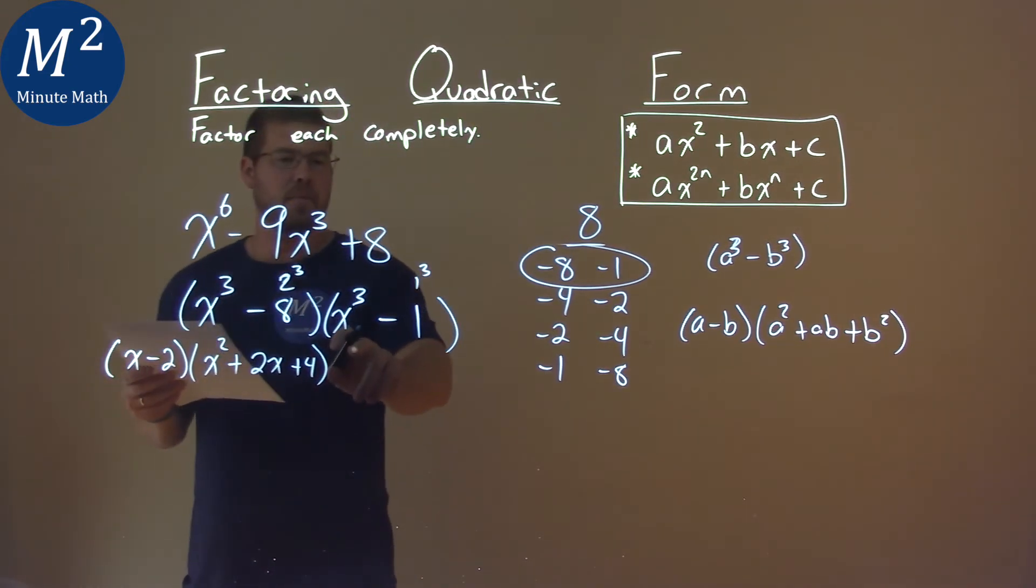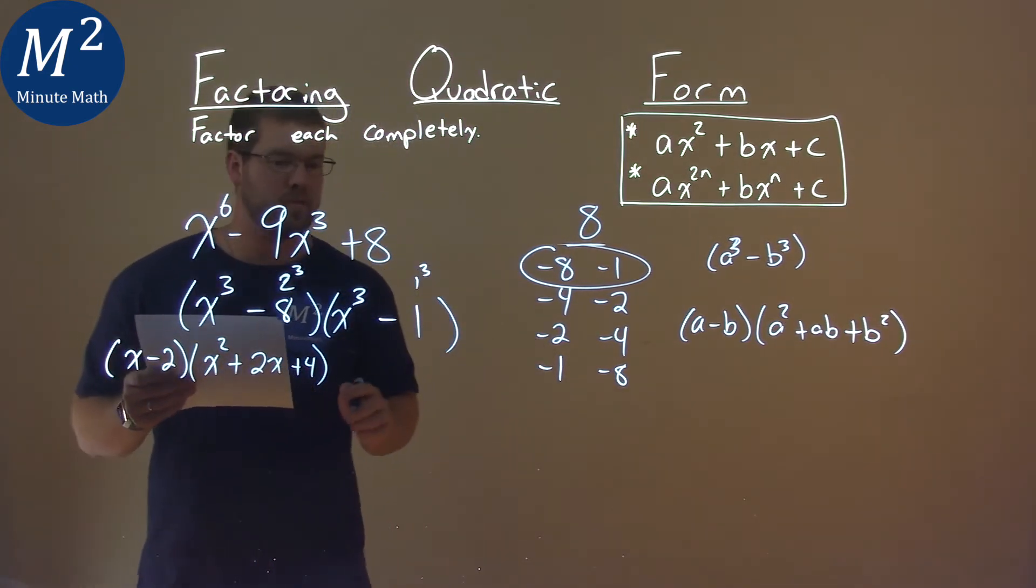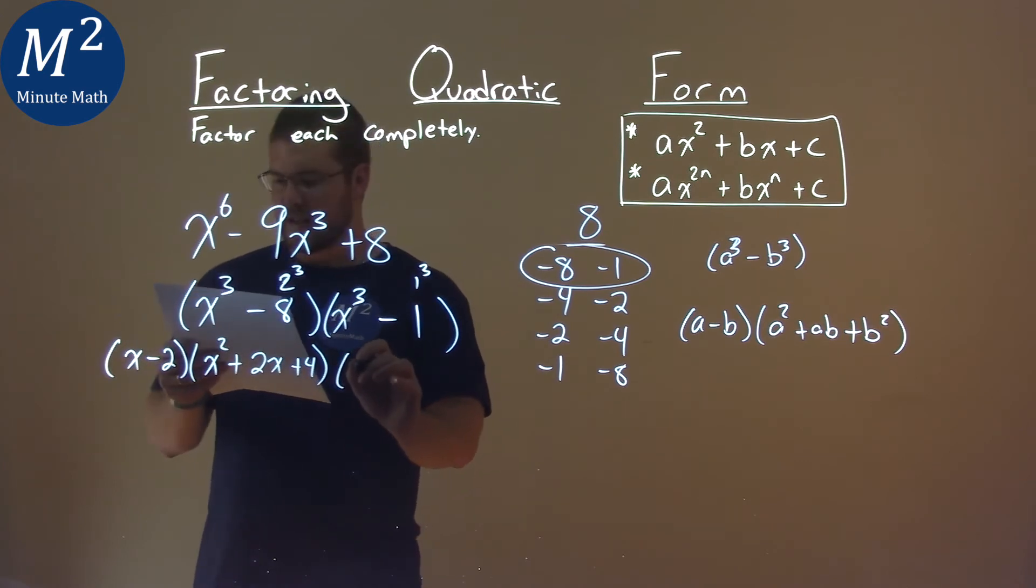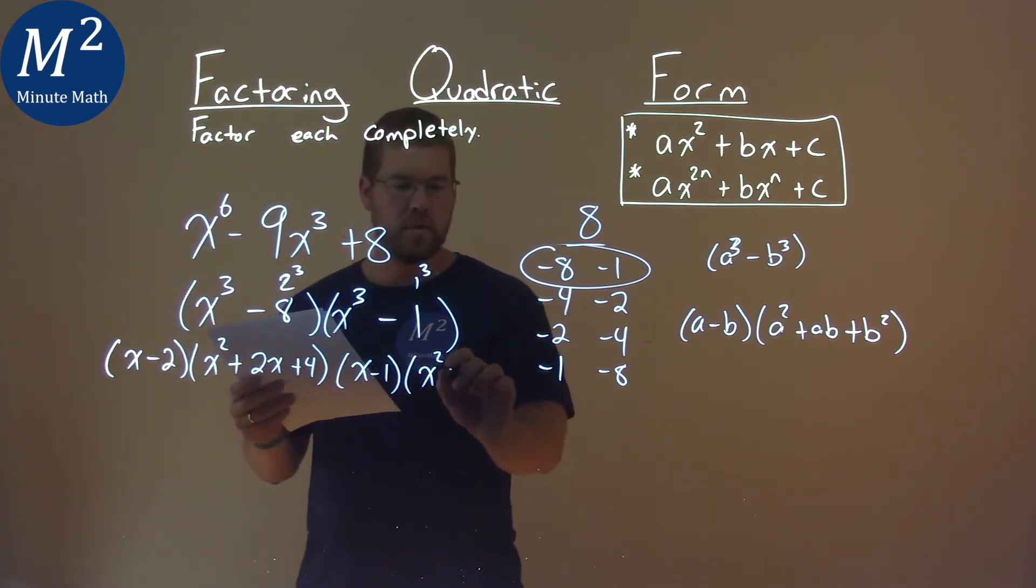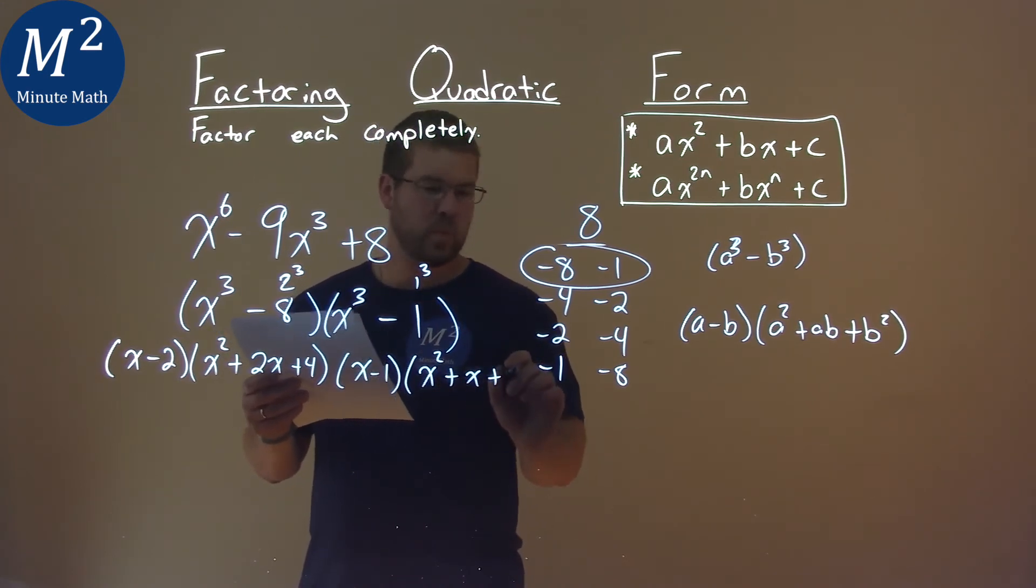And we do the same thing with the second part here. Our a value is x, our b value is 1. Same thing, x minus 1. Then we have x squared, plus 1 times x is 1x, or just x, plus 1 squared, which is 1.